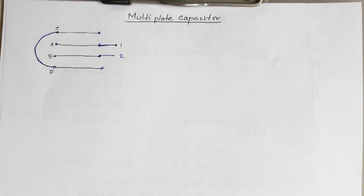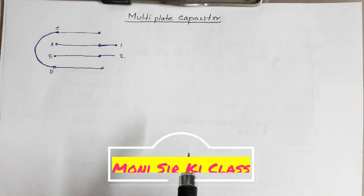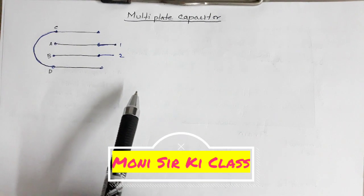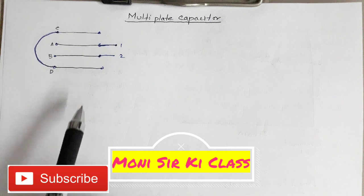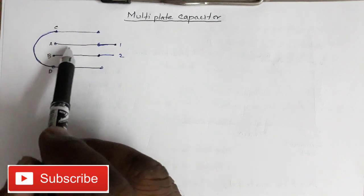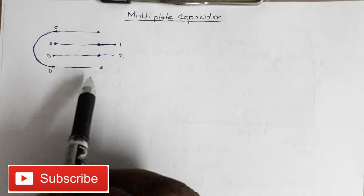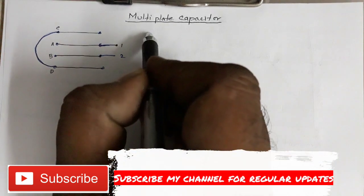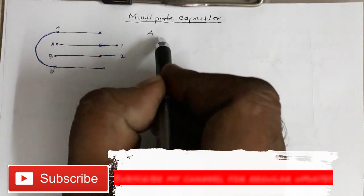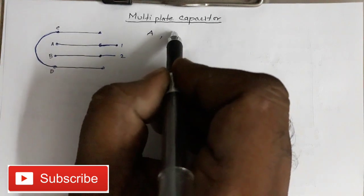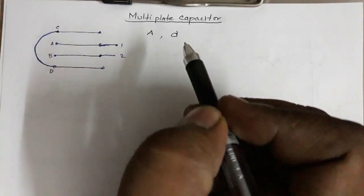Hi everyone, welcome to my channel. In this video we are going to see how to calculate the capacitance of a multi-plate capacitor. These are all identical parallel plates, each of area A, and the separation between each plate is the same, equal to D.